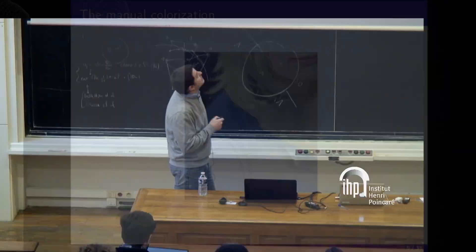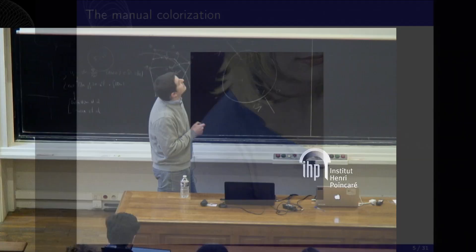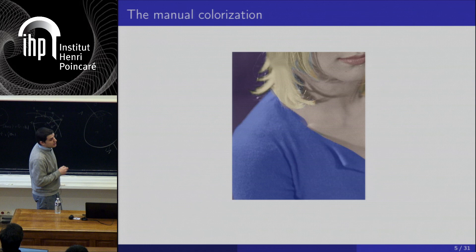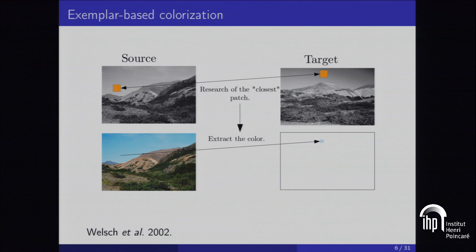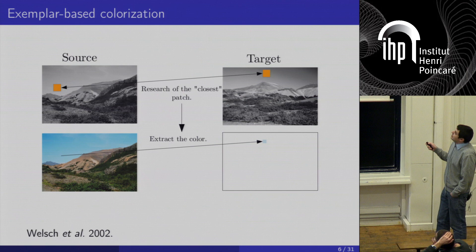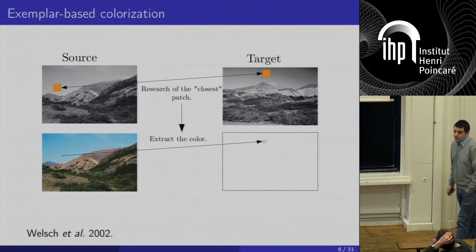Here are some drawbacks of the fully manual method: you can see the polygon shape even when done by a professional expert user — there are artifacts. To avoid user interaction, you can use example-based methods. If you want to colorize a target grayscale image, you can use a color reference image and match the two images to transfer the colors of the reference onto the target. With a patch-based method, you convert the color image to a source image and its grayscale version, then for each pixel of the target image you compare patches with those of the source image, extract the nearest chrominance value, and combine it with the luminance to recover a color for each pixel.